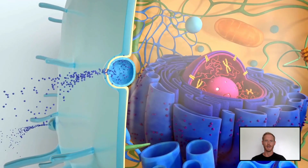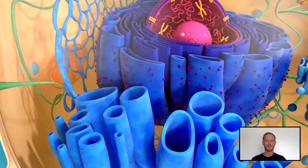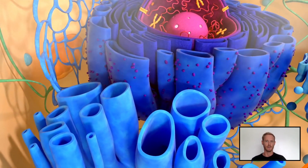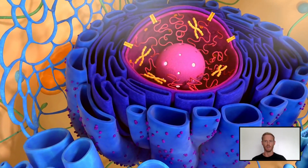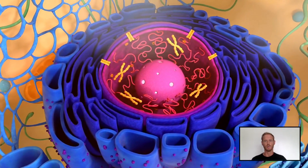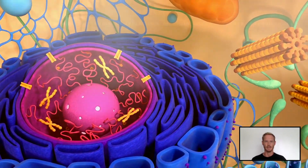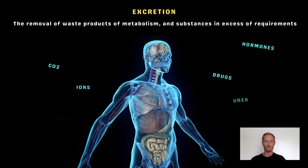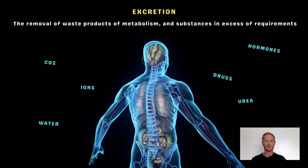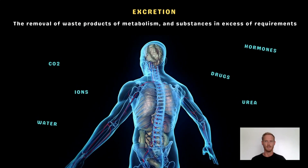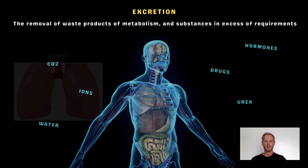Many of the chemical reactions that take place in cells release toxic byproducts that can disrupt the normal functioning of the organism and cause damage if allowed to accumulate. Excretion can be defined as the removal of waste products of metabolism and substances in excess of requirements.